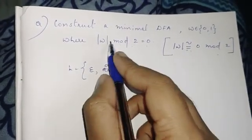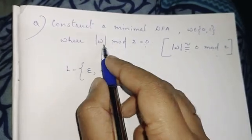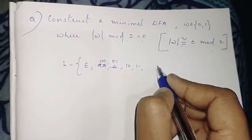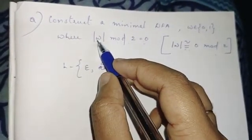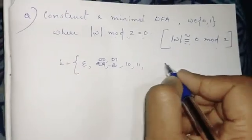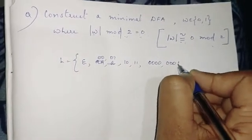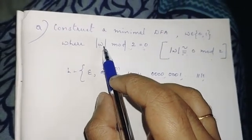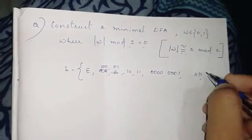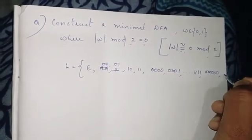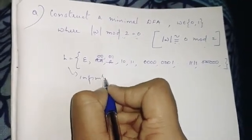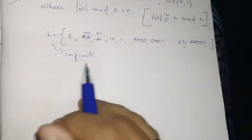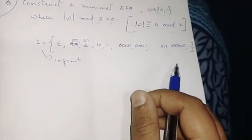The length of the string is 3, then 4, then 5 — more than 2 — then 6, and so on. This is an infinite language. That is the even-length string DFA construction — the corresponding DFA for even-length strings over {A, B}.